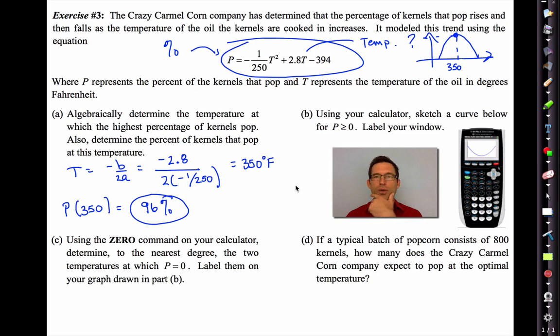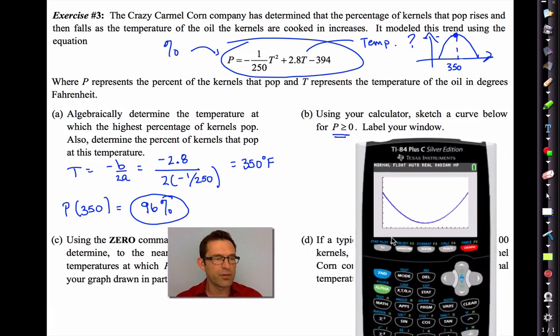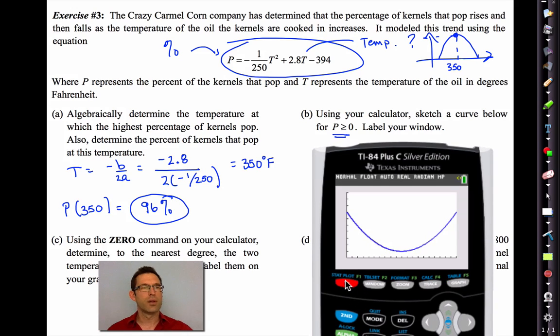But what we want to know is also the percentage of the kernels that pop. Well again, that's just an issue of putting that 350 into the equation. I'm not going to show you the substitution. Being very careful, cranking through all of that, what you end up finding is 96%. So at best, we're not going to get 100% of those kernels to pop. But at a 350 degree Fahrenheit temperature, 96% are going to pop. Now, letter B says, using your calculator, sketch a curve below for P greater than or equal to zero. Label your window.